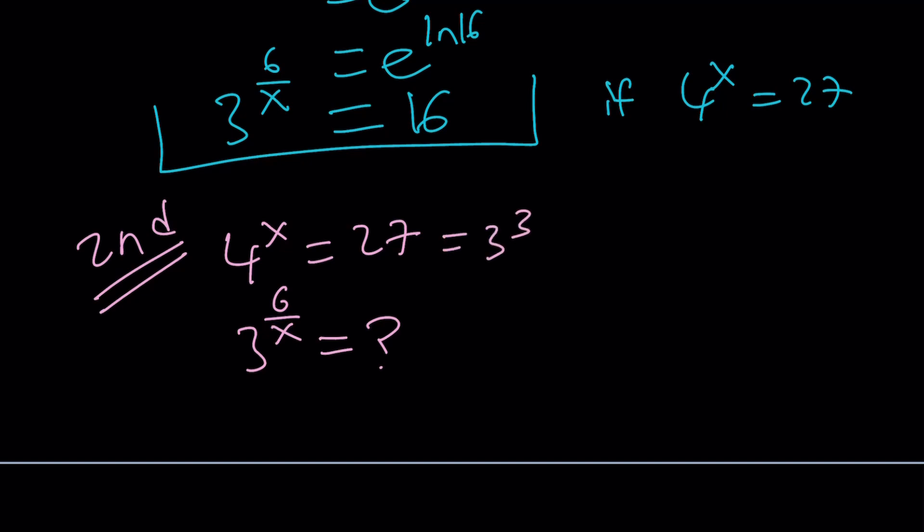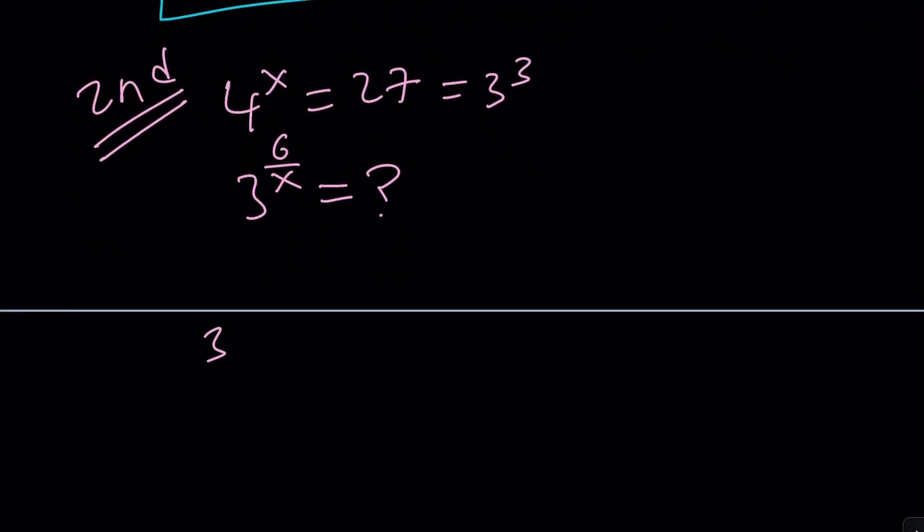From here, I want to isolate the 3. Let's rewrite this expression. 3 to the 3rd equals 4 to the x. Now I want to raise both sides to the power of 1 3rd, which is definitely going to simplify. 3 and 1 3rd gives you 1. And now we get 3 equals 4 to the power of x times 1 3rd or x over 3. You can just directly multiply them.